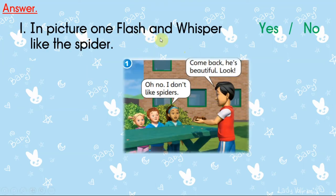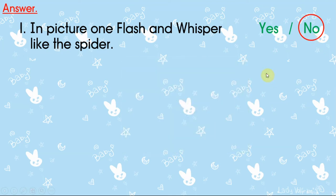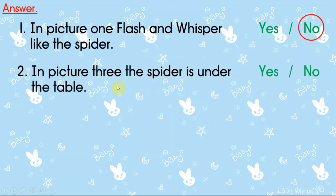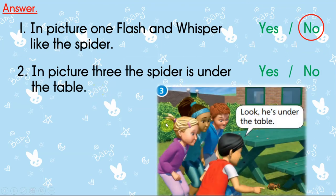Please use yes or no to answer the questions. In picture one, Flash and Whisper like the spiders — yes or no? 我们看一看，Flash 和 Whisper，他们喜欢吗？No. Flash 是不喜欢，只有 Whisper 喜欢，so the answer is No. In picture three, the spider is under the table. 在第三个图片里面，那只蜘蛛是在桌子底下的。Look, he's under the table. 所以是 yes 还是 no？Yes!